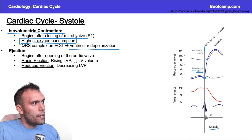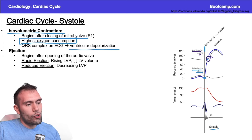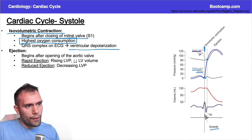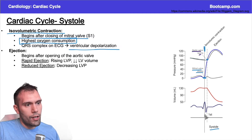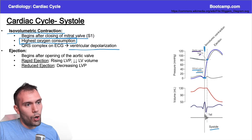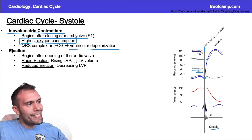The aortic valve opens when the left ventricular pressure exceeds the aortic pressure. Looking at the gray line representing aortic pressure, the aortic pressure was much greater than the left ventricular pressure throughout isovolumetric contraction. But once left ventricular pressure exceeds aortic pressure, the aortic valve opens and we start ejecting blood — that's the ejection phase. Initially there's a rapid ejection phase where a large amount of blood is ejected, and eventually we reach a peak and pressure begins to decrease while we're still ejecting blood.